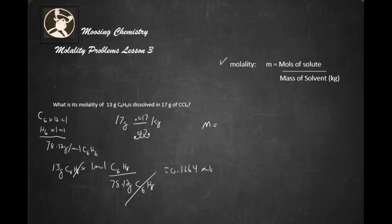All right, now we're ready. So we get little m equals moles of solute, which is 0.1664 divided by 0.017. The molality of this particular substance is going to be 9.8 little m there.